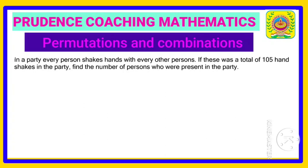In a party, every person shakes hands with every other person. If this was a total of 105 handshakes in the party, find the number of persons who were present in the party.